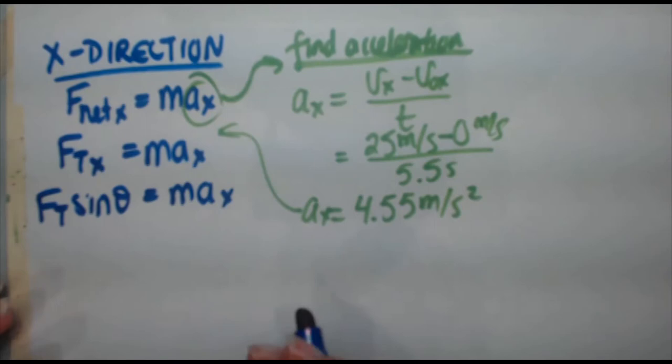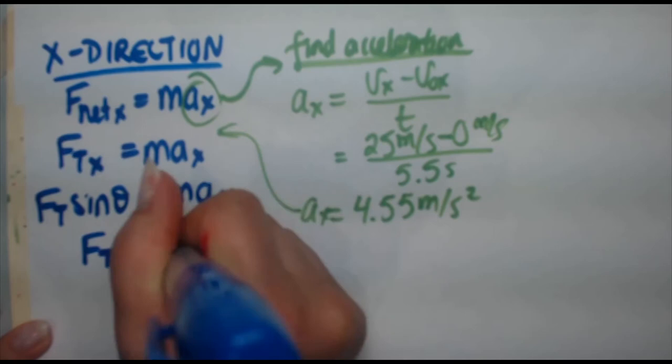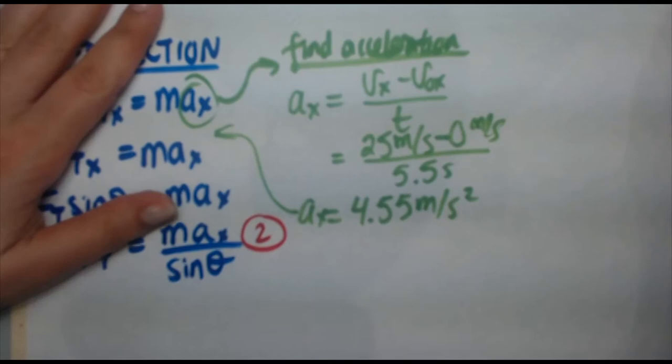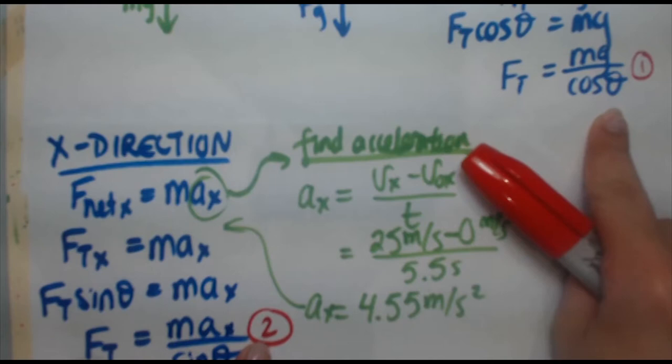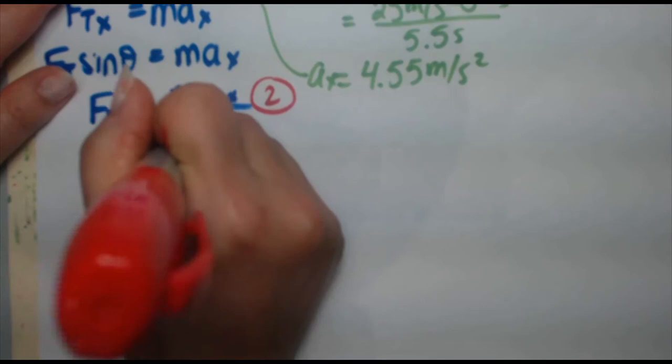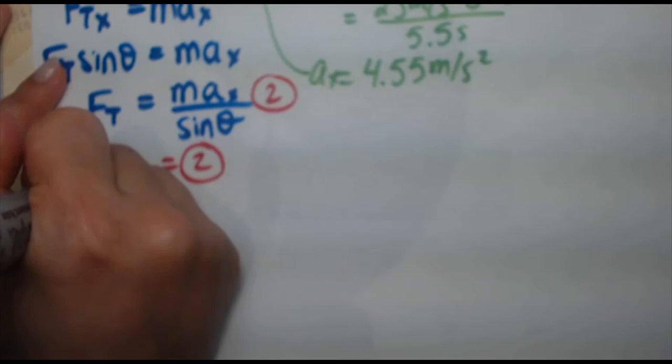FT sine theta equals m a x. Isolate for FT. Divide both sides by sine theta, m a x over sine theta. And there you have equation number two. Remember equation number one we had also in terms of FT? Now we've got equation two, also FT. So next step would be to set equation one equal to equation two, and solve.